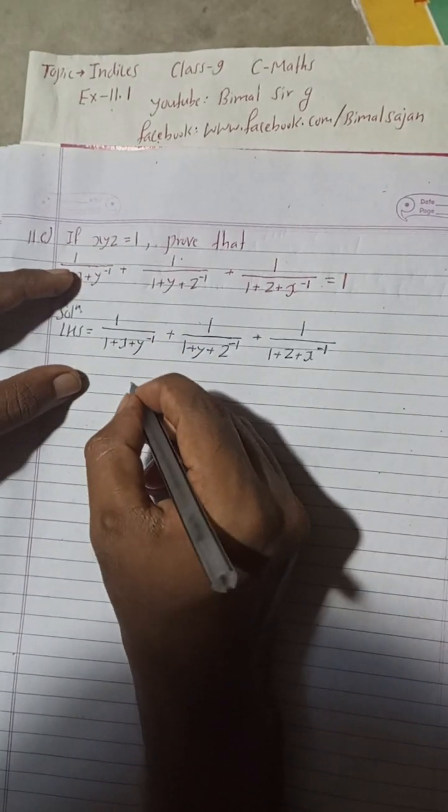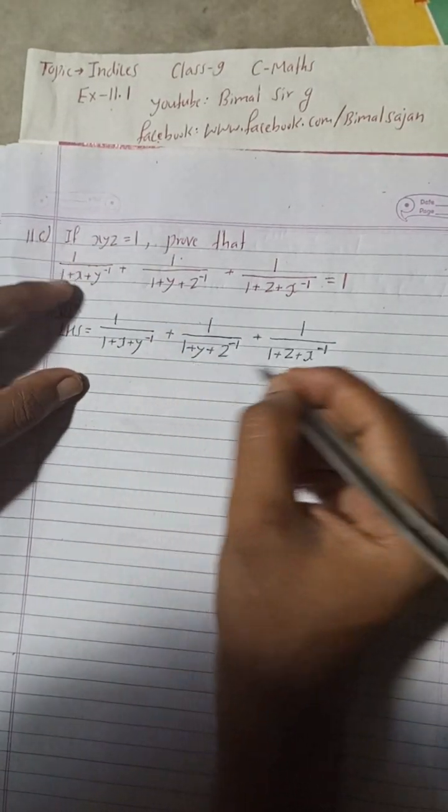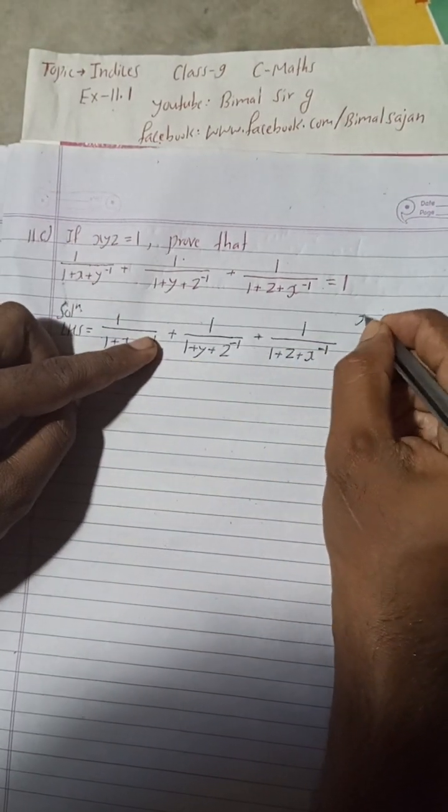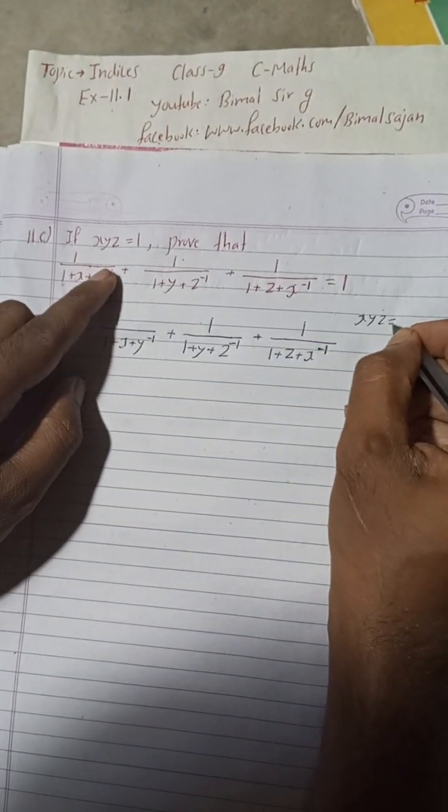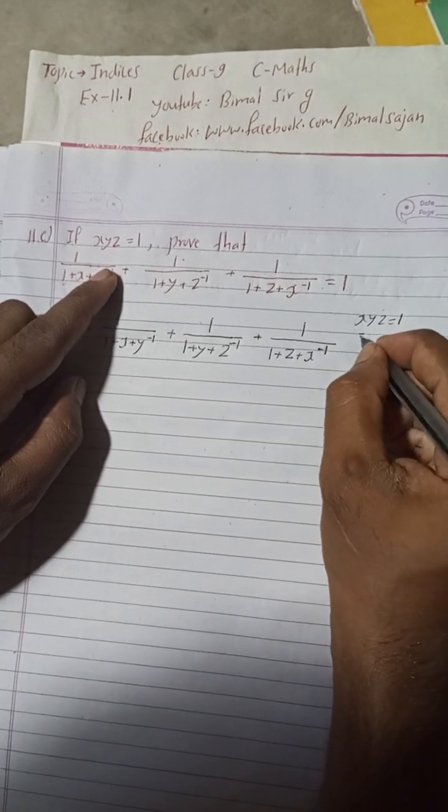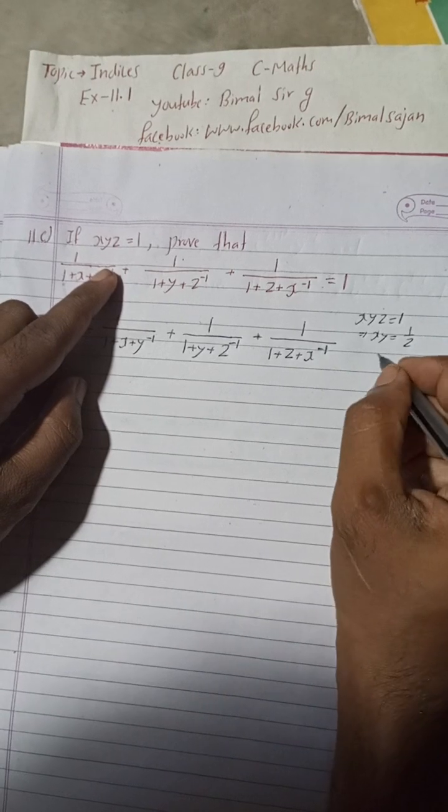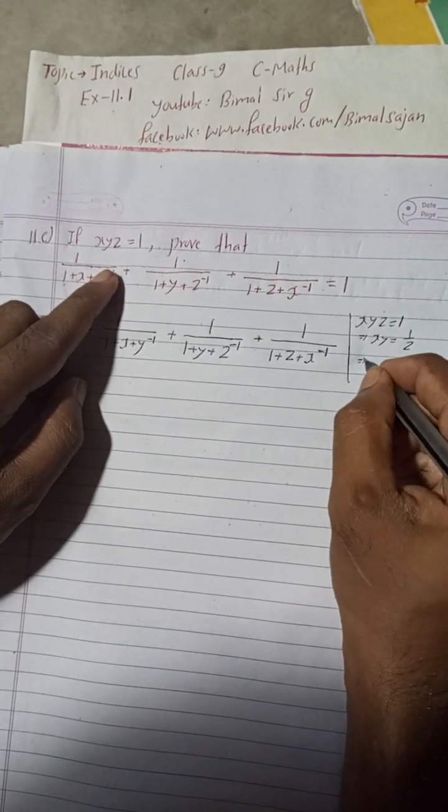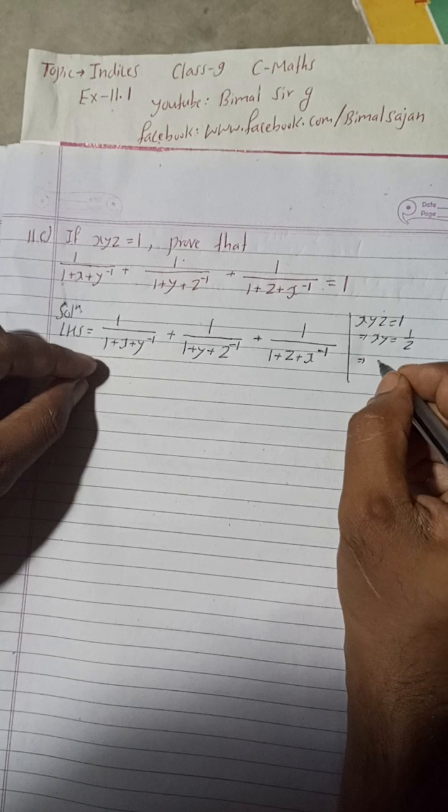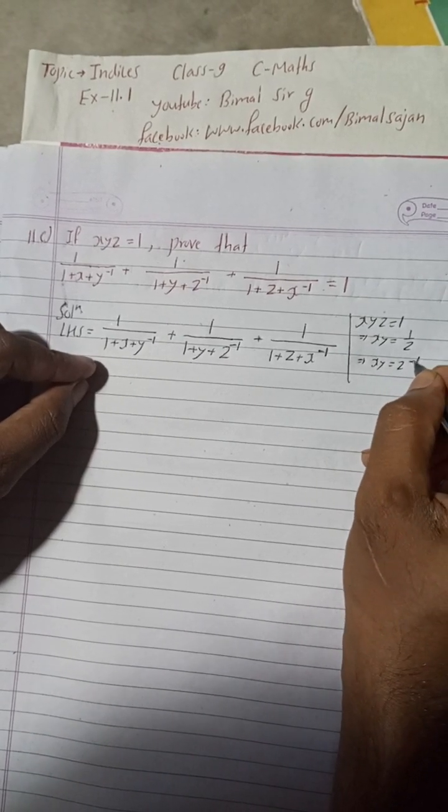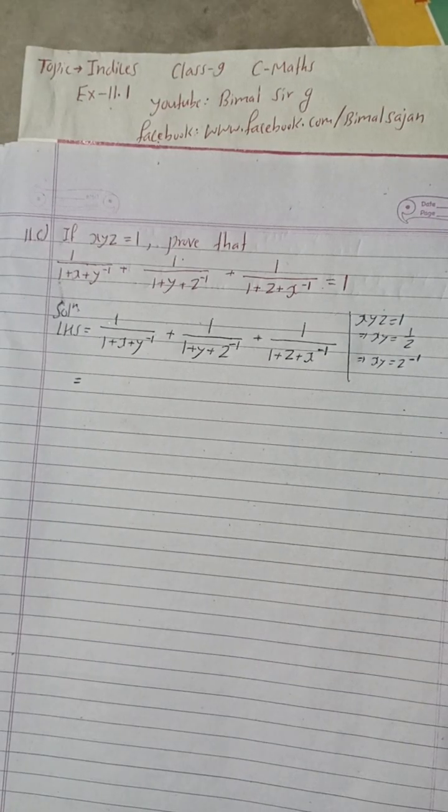Here is given xyz = 1. What does this imply? xy = 1/z, and this implies xy = z^(-1). We will now do the same things here.